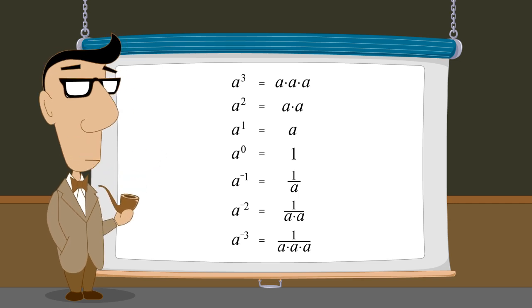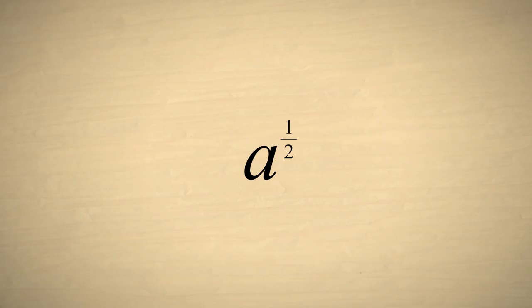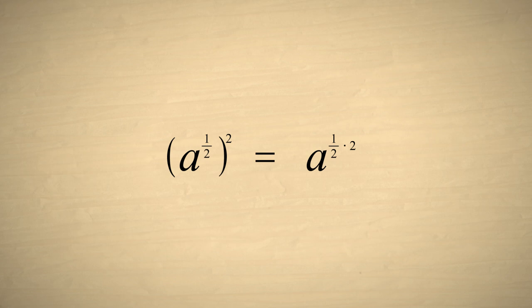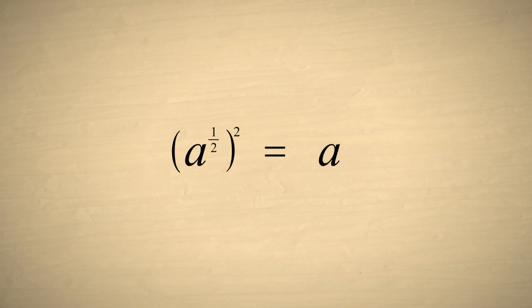It is natural to wonder if there would be meaning to an exponent that was not an integer. For instance, what would be the meaning of an exponent of one-half? We can use the rules of exponents to figure this out. If we square a to the one-half, we multiply the exponents one-half and two. This gives us a to the first power, which is the same as a. So a to the one-half is the number that when squared is equal to a. This is the definition of a square root. Therefore, a to the one-half must be the square root of a.